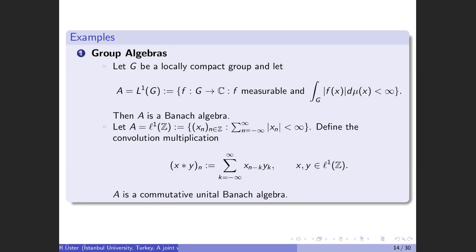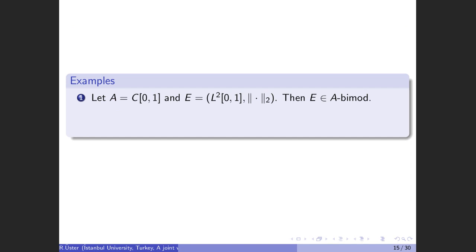Also, if we take l^1(Z) it is a unital commutative Banach algebra with the discrete convolution product and the l^1 norm. Let us give some module examples: if we take the continuous function space C[0,1], it is a Banach algebra, and if we take E as L^2[0,1], it is a bi-module — both a left module and a right module.